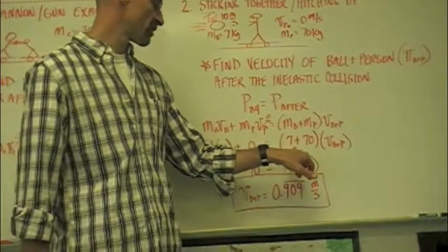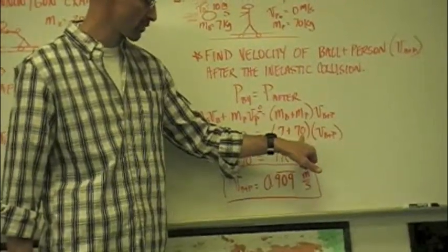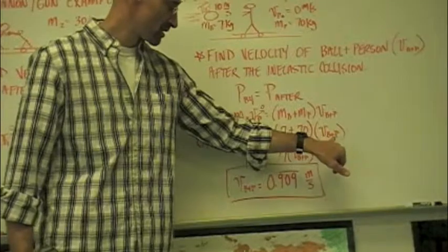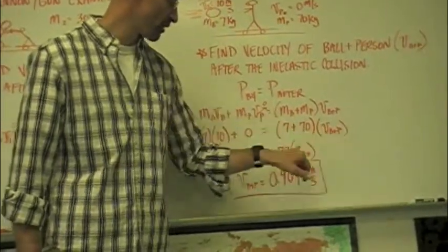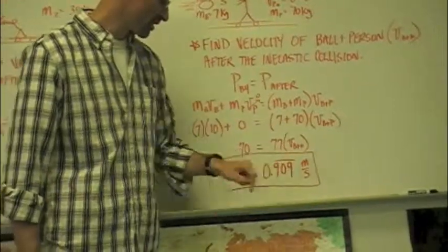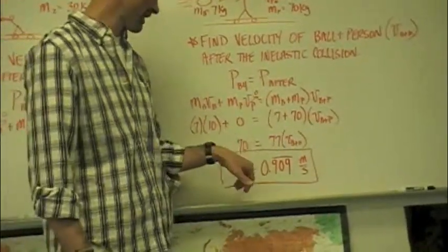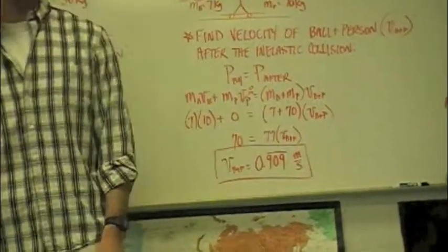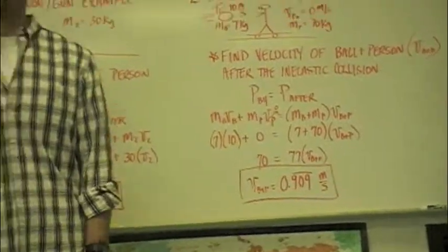And then after the collision, we got the mass of the ball plus the mass of the person times the new velocity that we don't know. So, we get 77 times that, we divide over, and we get a new velocity of the ball and the person of 0.91 meters per second.